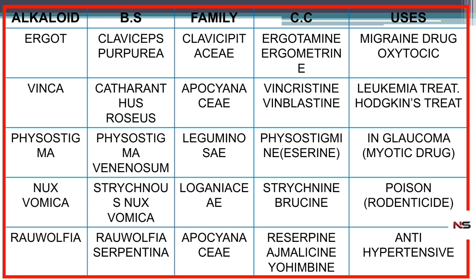Next one is physostigma. Biological source: Physostigma venenosum, belonging to the family Leguminosae. The main alkaloid present is physostigmine, also known as eserine. It is used as a miotic drug and anti-glaucoma agent.